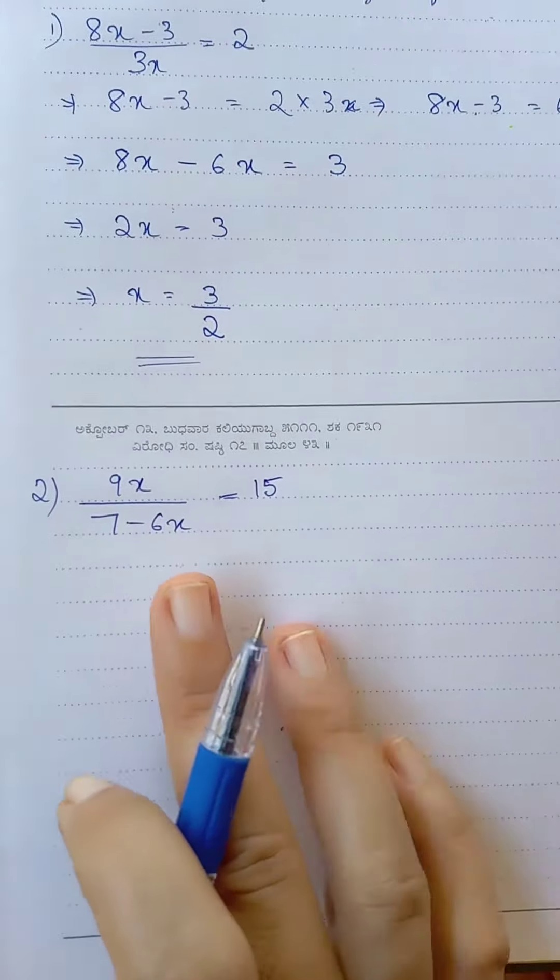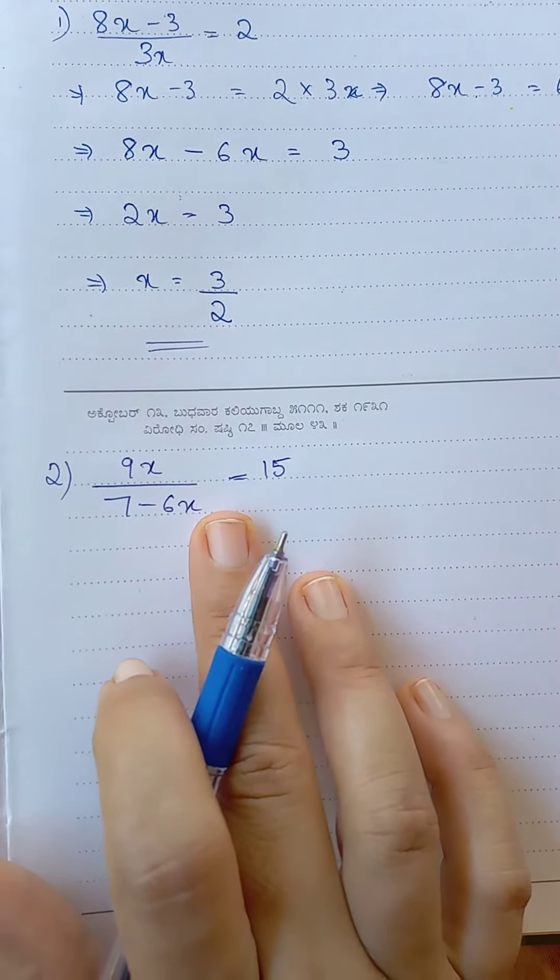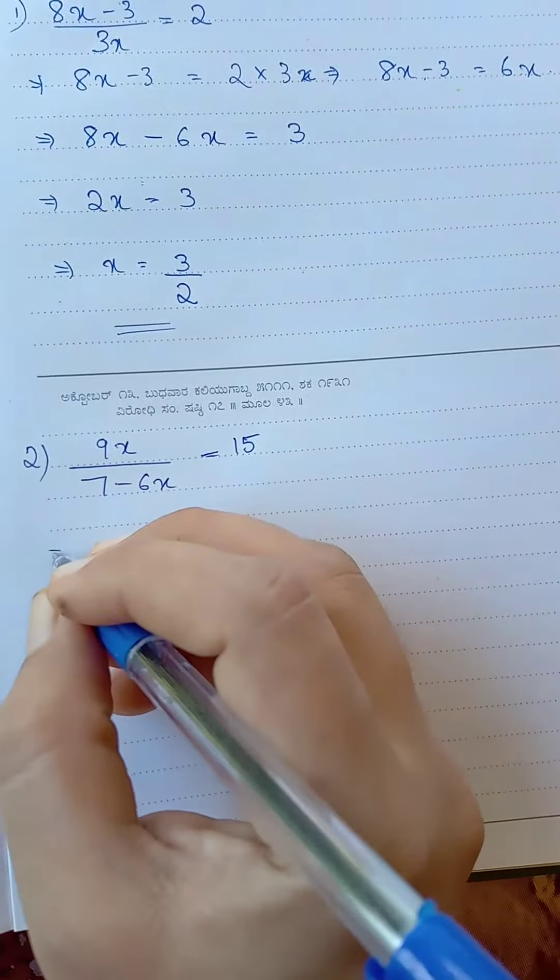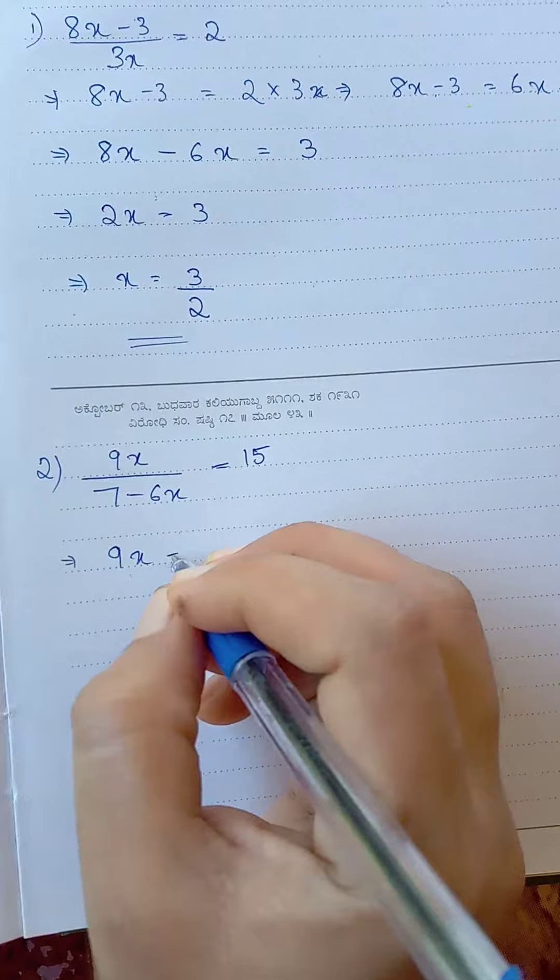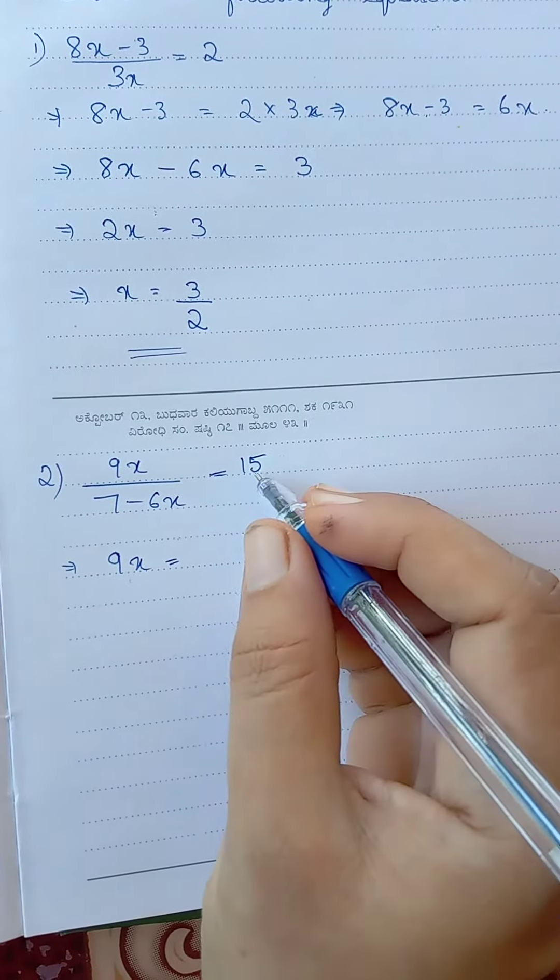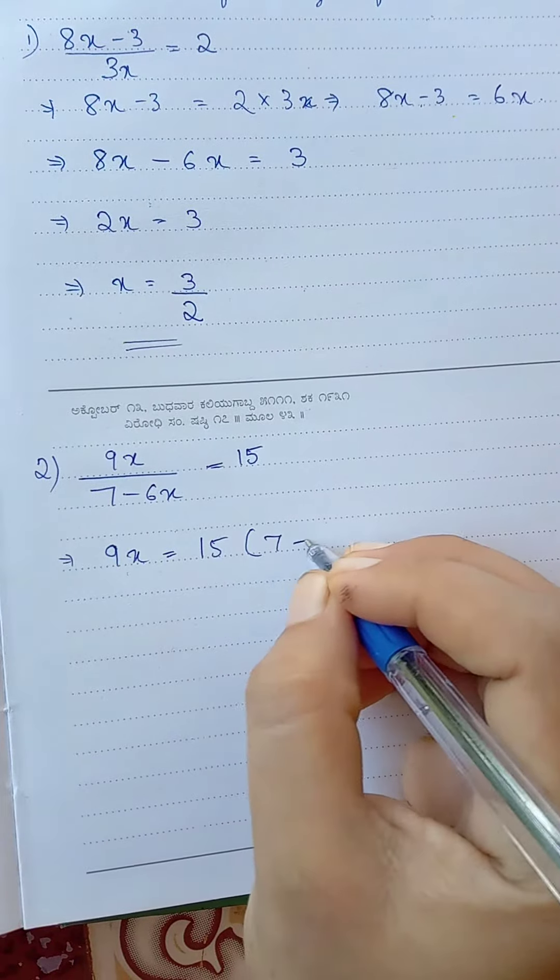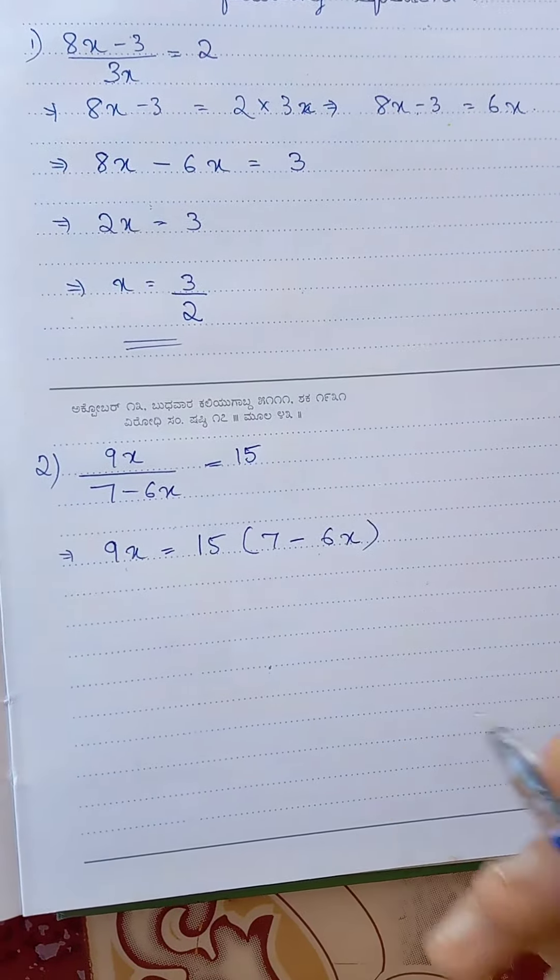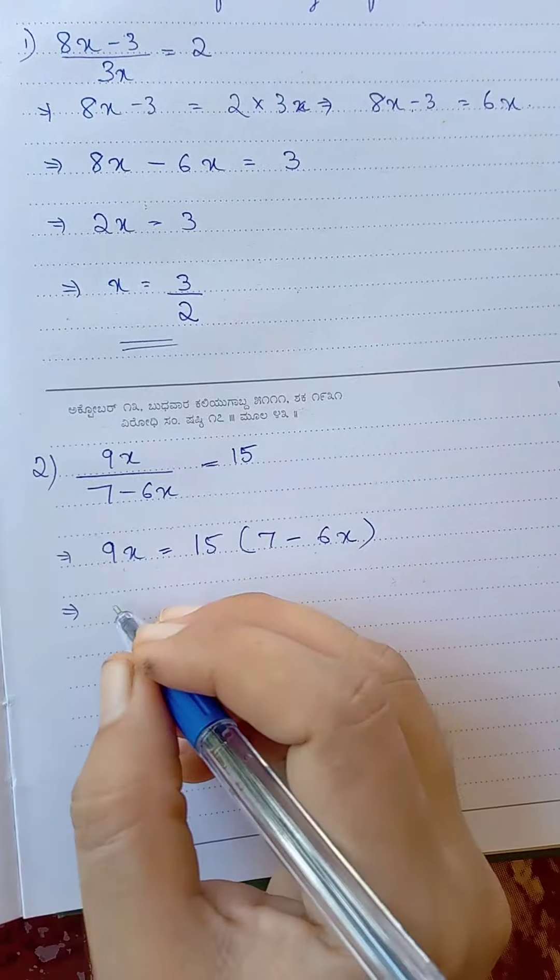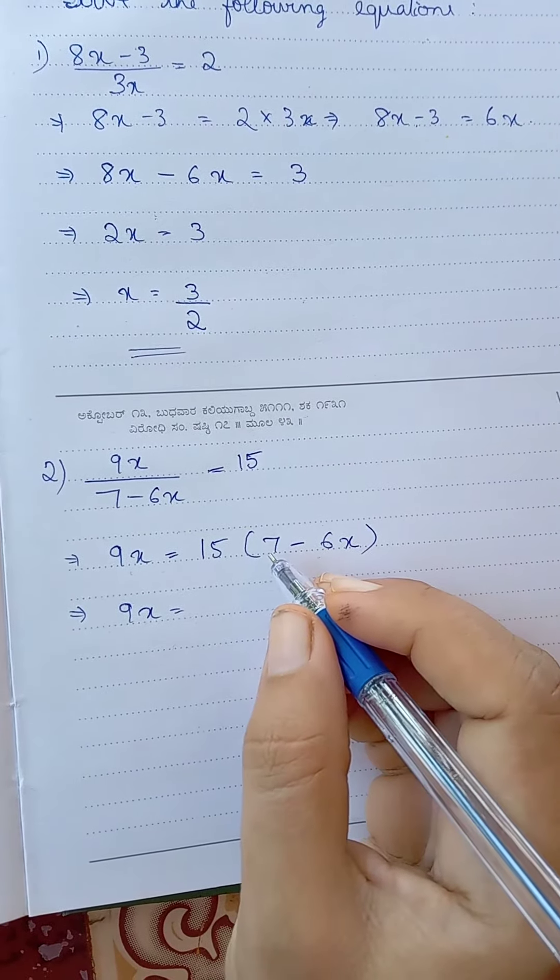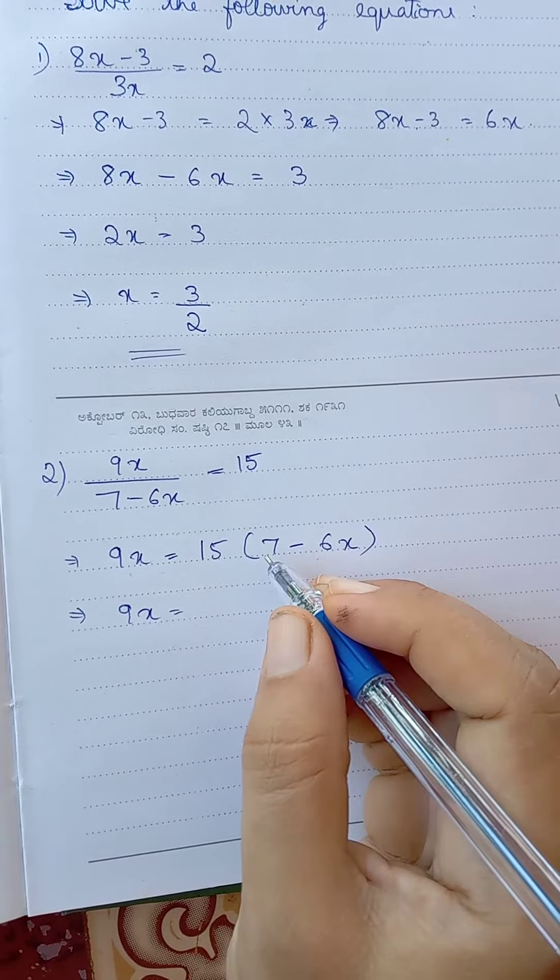Next equation: 9x divided by 7 minus 6x equal to 15. We need to transpose the term in denominator to numerator, so 9x equal to 15 into 7 minus 6x, which implies 9x equal to 15 into 7.